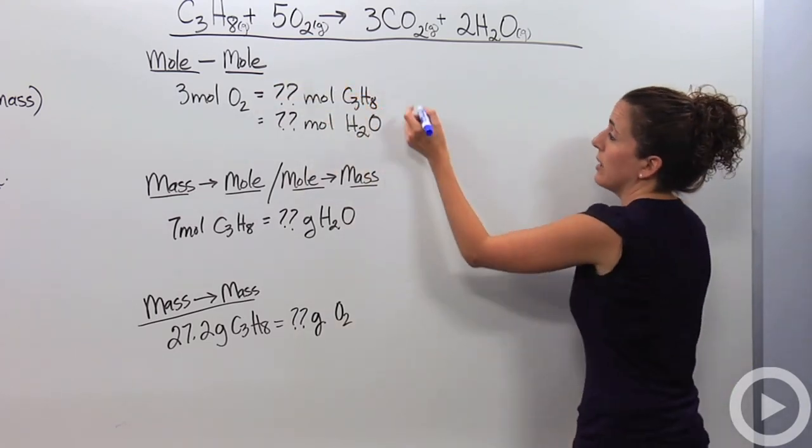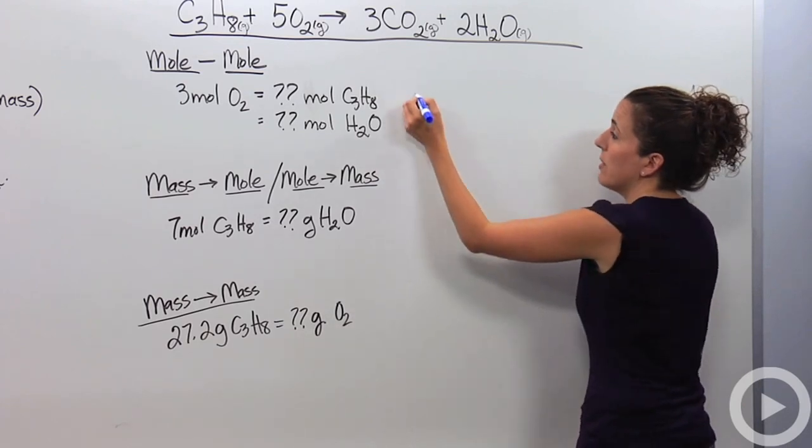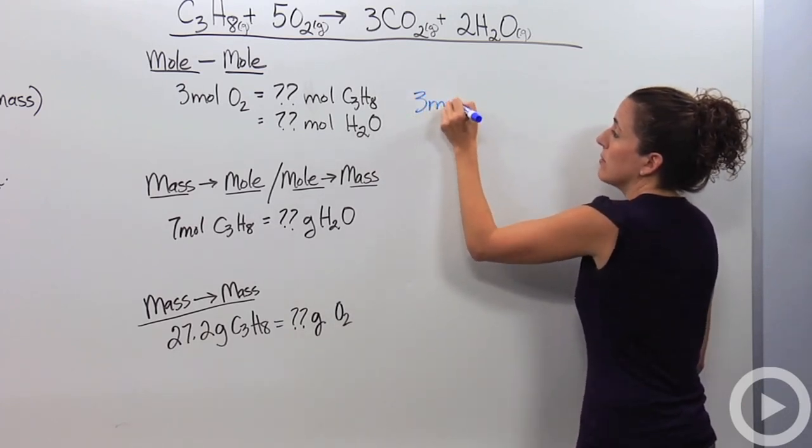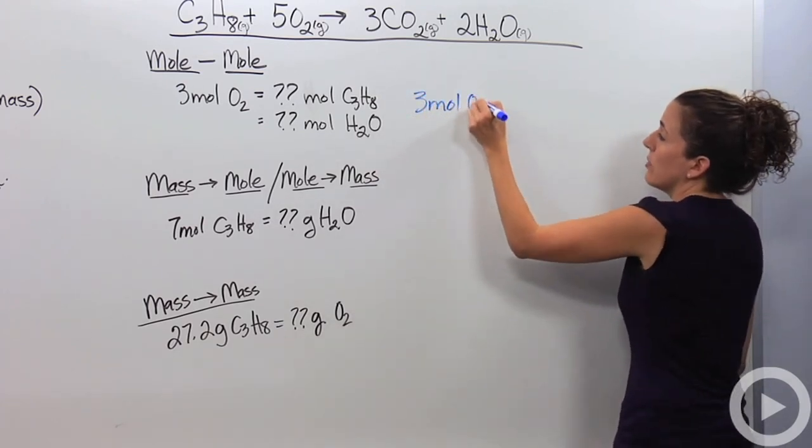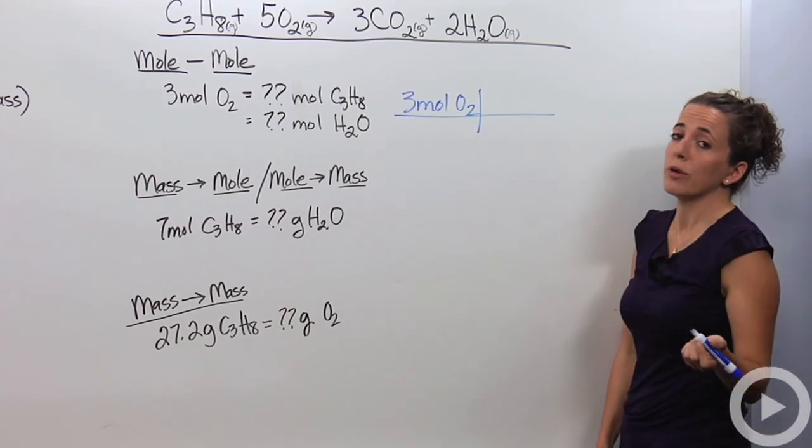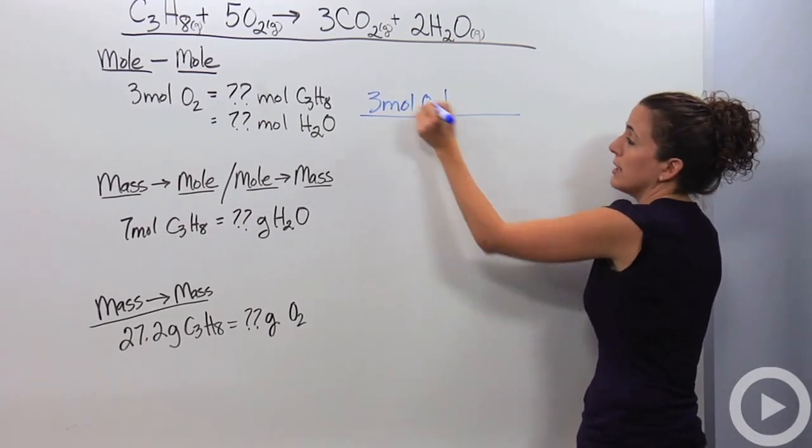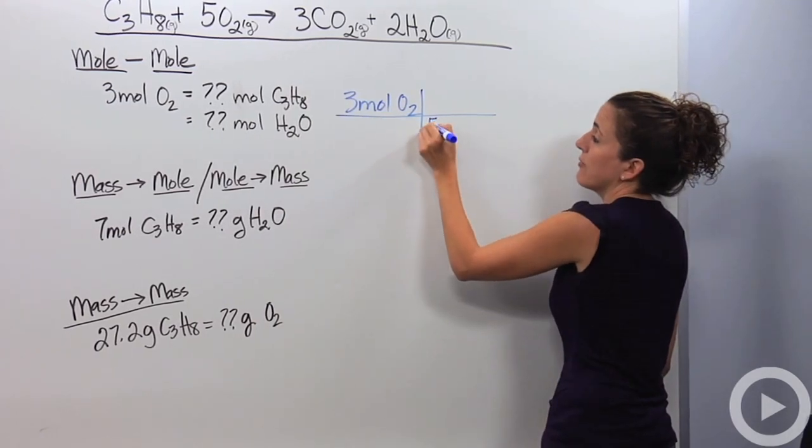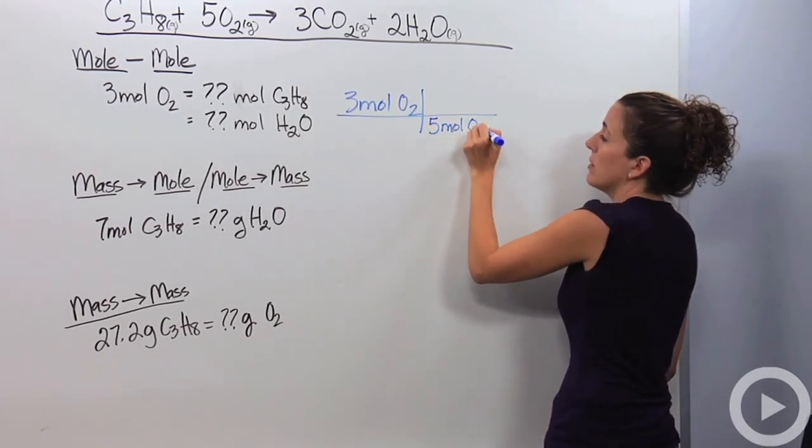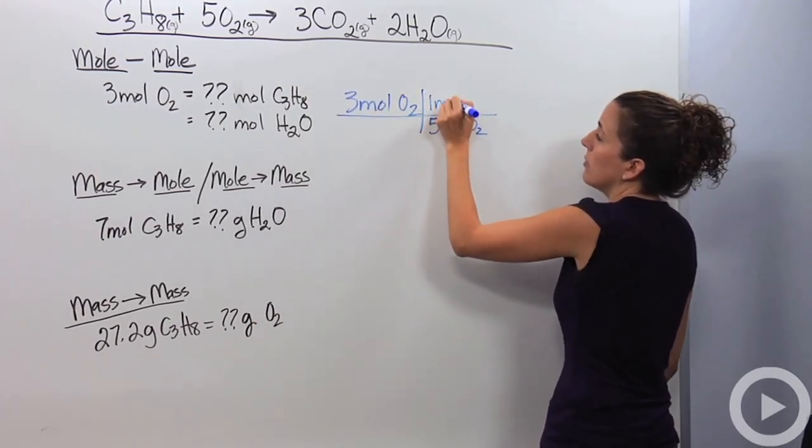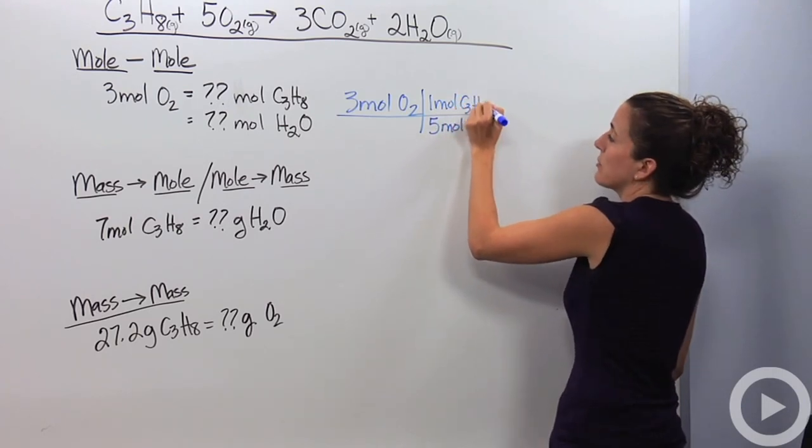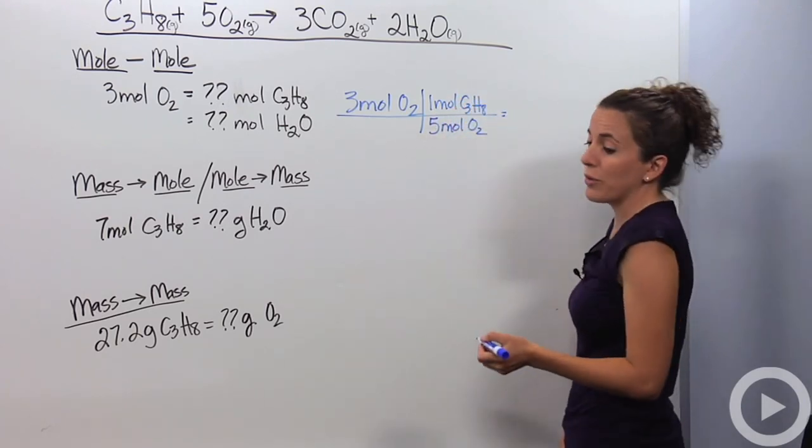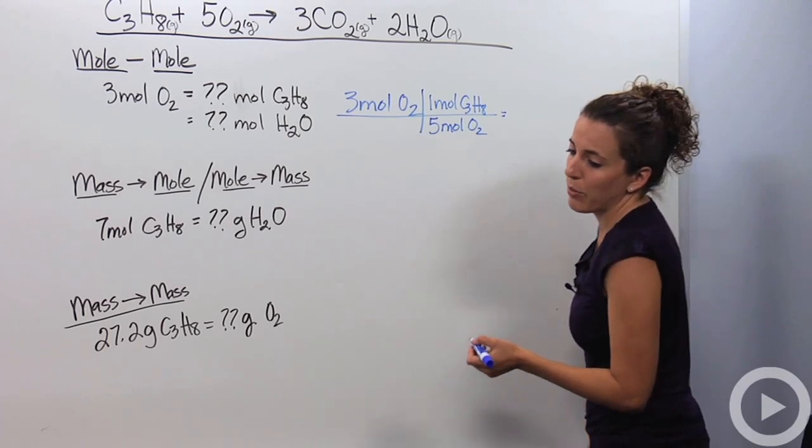I'm going to start at the beginning. I'm going to do a molar relationship and say 3 moles of O2. I'm going to do what we call a mole ratio. I look at my reaction and say for every 5 moles of O2, I require 1 mole of C3H8 to react with that. So 3 divided by 5 is going to give me 0.6.